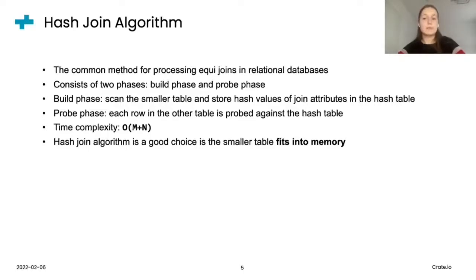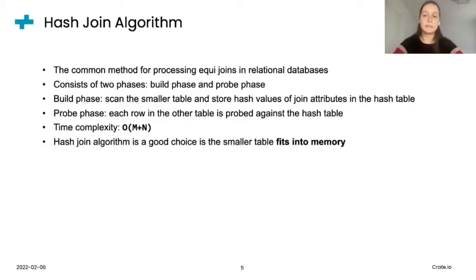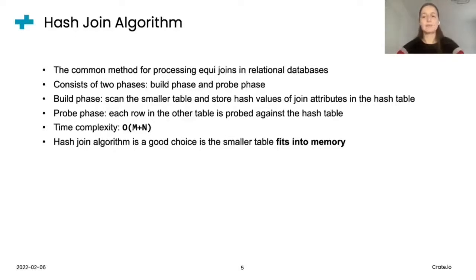The idea behind the hash join algorithm consists of two phases: build phase and probe phase. During the build phase, the algorithm scans the smaller table and stores hash values of join attributes in the hash table. Next, in the probe phase, the algorithm probes each row in the other table against the hash table. If a match is found, it emits the join row. This algorithm is significantly more efficient compared to nested loop — its time complexity is linear with respect to the number of rows of the two tables involved in the join. Furthermore, this algorithm is a very good choice if the smaller table fits into memory, but as I will discuss a little bit later, this is also a significant limitation of the hash join, especially when we talk about CrateDB and distributed execution.